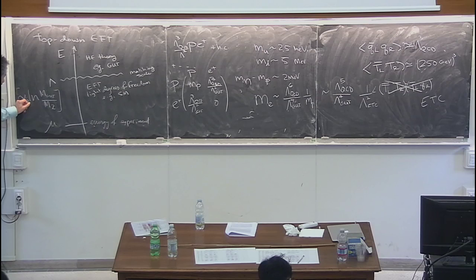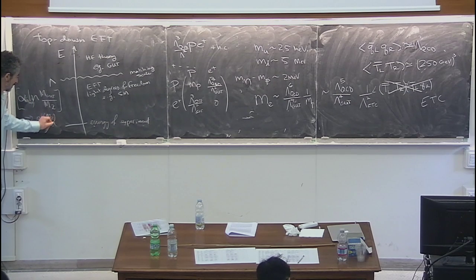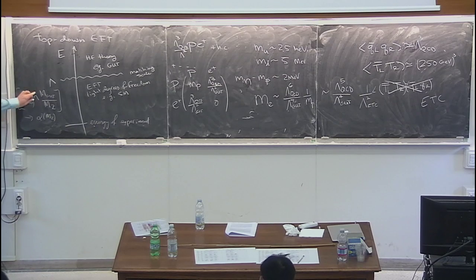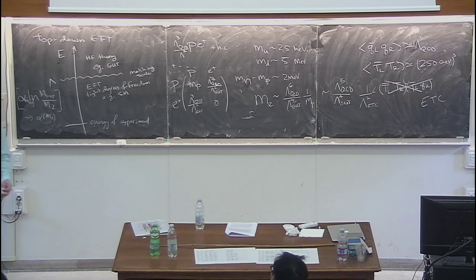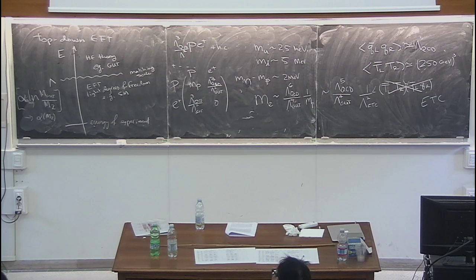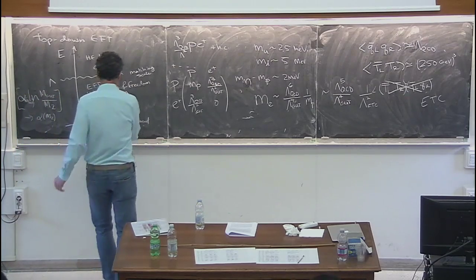You want to RG-improve the theory - sum up all the leading log terms. That's what the renormalization group does: it replaces the large log by running alpha from M_GUT to M_Z. If you solve the beta function to two loops, you're summing up alpha log squared terms and so on. The only way you can solve the renormalization group equation is if you use a mass-independent subtraction scheme, and the obvious one everybody uses is MS-bar.